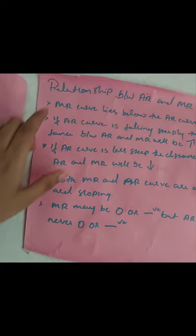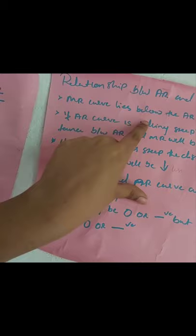The relationship between AR and MR: MR lies below the AR curve. When the AR curve is less steep, the distance between AR and MR will be greater.